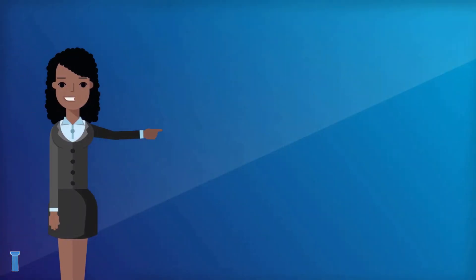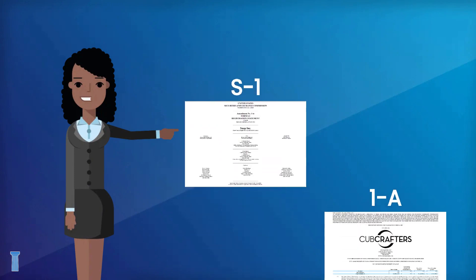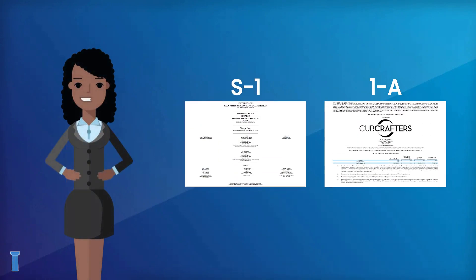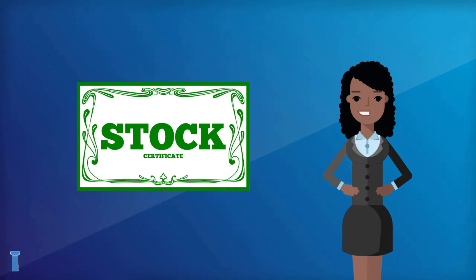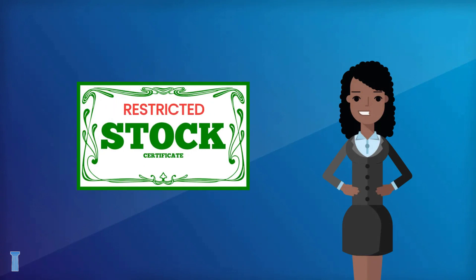First, let's talk about S1 and 1A filings. These documents contain crucial information about your company's IPO. If your shares were included in these filings, you can remove trading restrictions more easily. If your shares were not included in the company's S1 or 1A, then they might have restrictions on them.